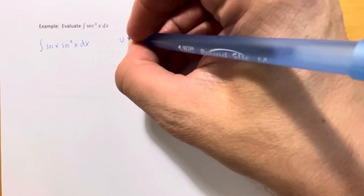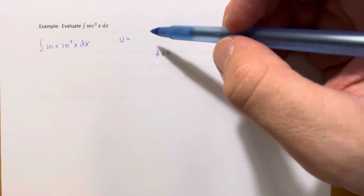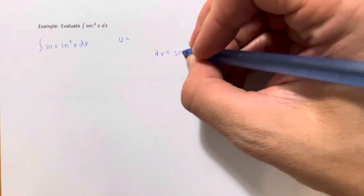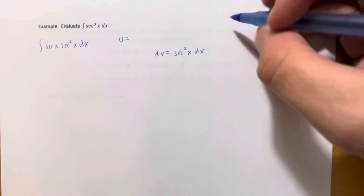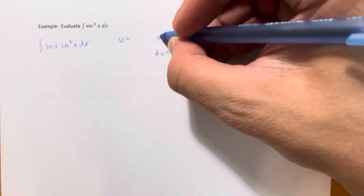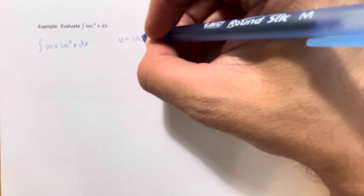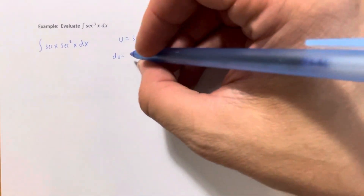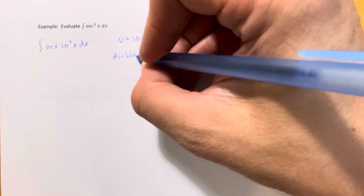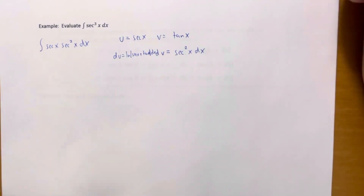Integration by parts requires picking u and dv. The clear choice for dv is secant squared, because we recognize it as the derivative of tangent — so v is automatically tangent of x. The remaining factor, secant of x, becomes u. Then du equals secant of x times tangent of x dx — the derivative of secant.